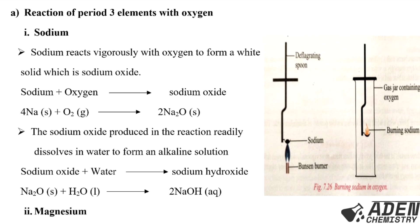Starting with the first element, sodium: sodium reacts vigorously with oxygen to form a white solid which is sodium oxide. The chemical equation is: four moles of sodium metal react with one mole of oxygen gas giving us two moles of sodium oxide, which is a white solid. The sodium oxide produced in this reaction readily dissolves in water to form an alkaline solution.